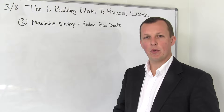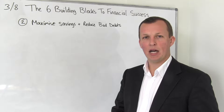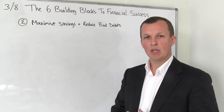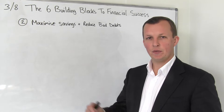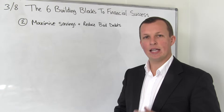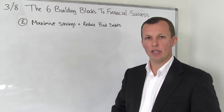In the previous video we talked about the income and expenses part of the argument — having a surplus income. This video is about the assets and liabilities part of that equation.